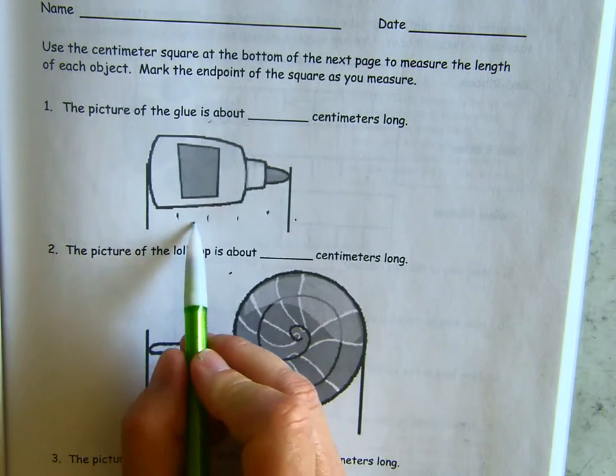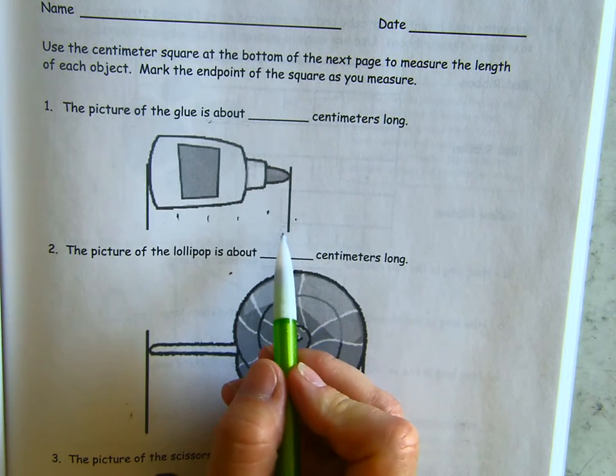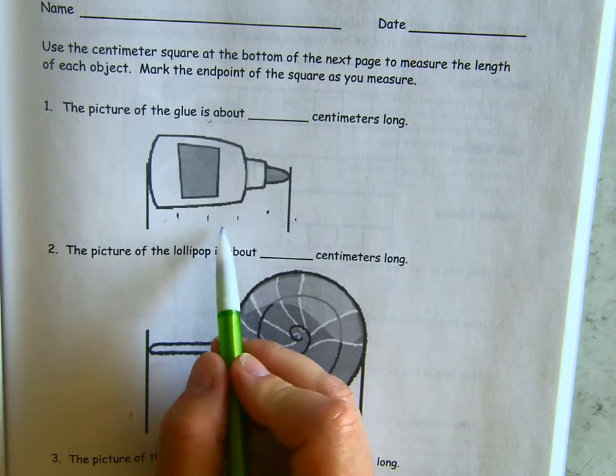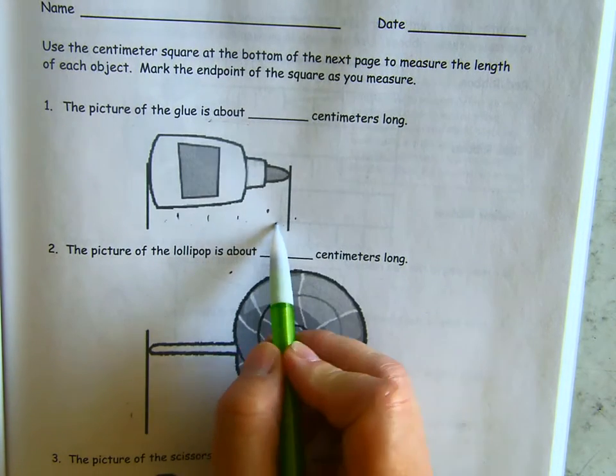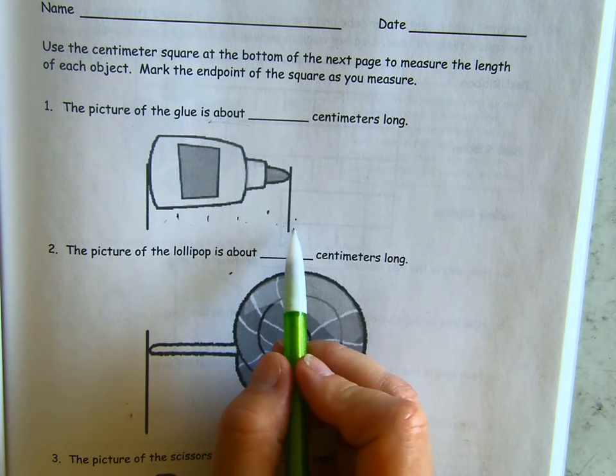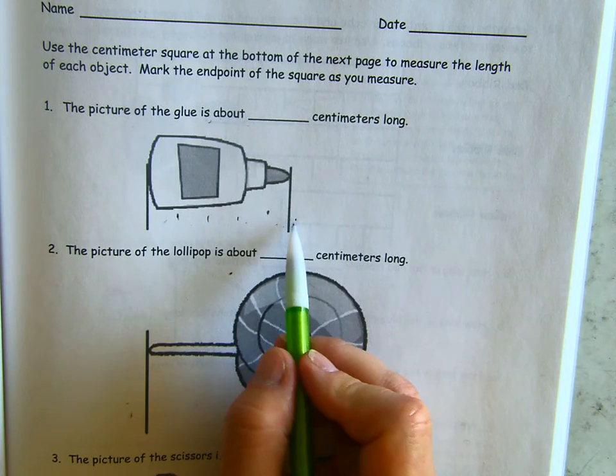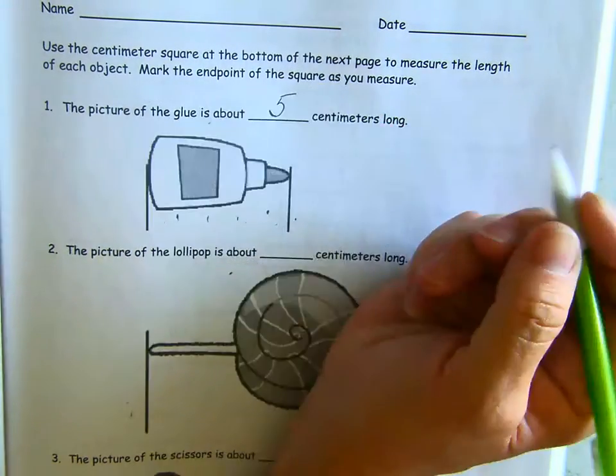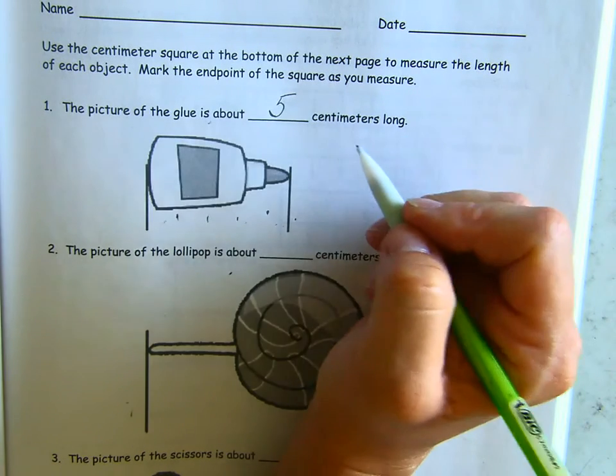Let's count how many centimeters we measured. One, two, three, four, five. It is about five centimeters long. It is just a little less than that, right? It is about five centimeters. And since they have the word centimeters here, I don't need to use the abbreviation.